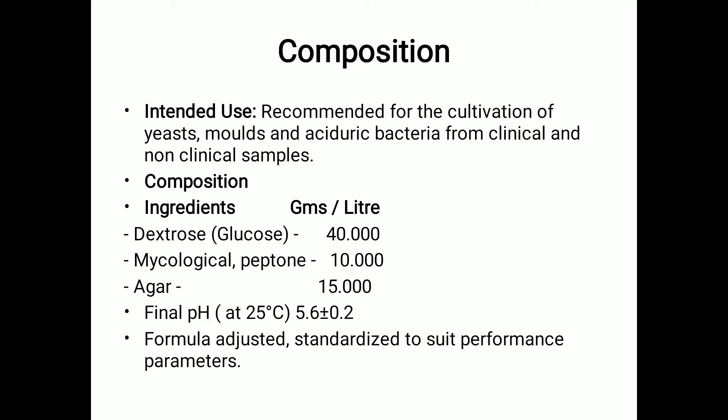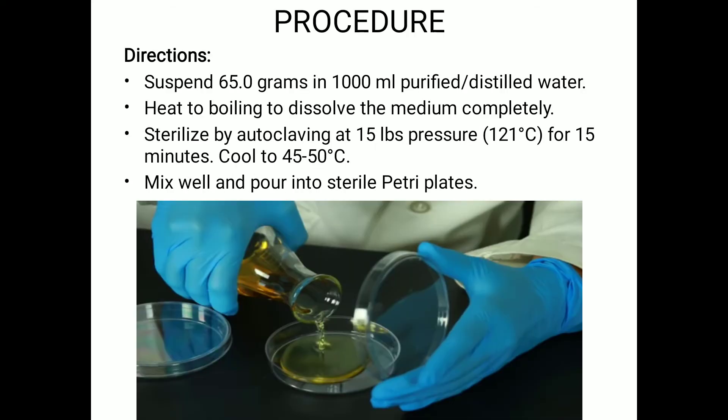We need to check the final pH around 25 degrees Celsius — it should be around 5.6 plus or minus 0.2. This formula should be adjusted and standardized to suit the performance parameters. Now, coming to the steps or the procedure on how to prepare this SDA media.